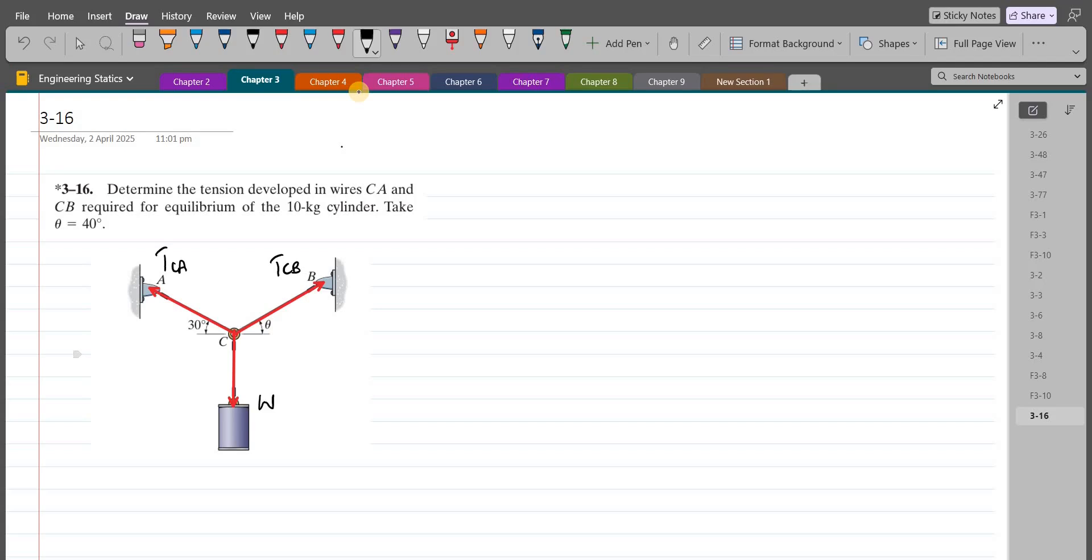Now we have to resolve this TCB force and the TCA force into its components. For TCB force, we have a horizontal component and a vertical component. Also for TCA force, we have a horizontal component and a vertical component. Let's label them.